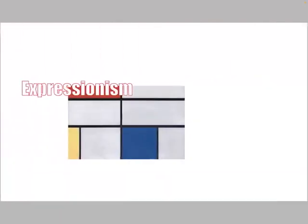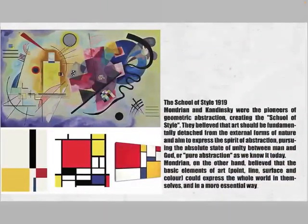First I will introduce expressionism, in which the most famous painters — Munch and Kandinsky — believed that everything in the world could be drawn using the most basic elements of art, such as point, line, and surface. All colors are made of the most basic colors: red, yellow, and blue. So they chose to paint everything with these basic elements.